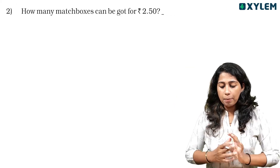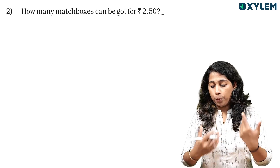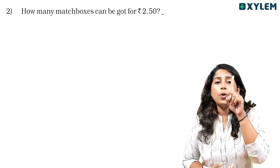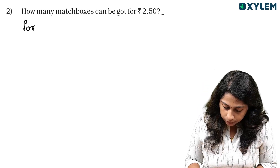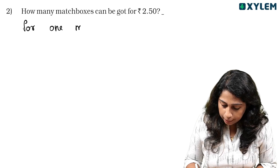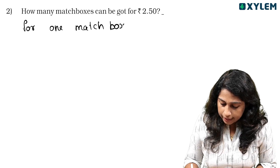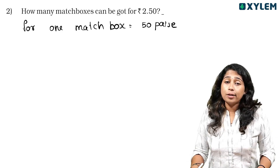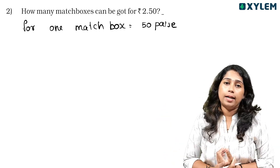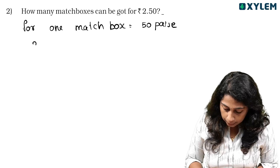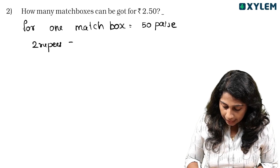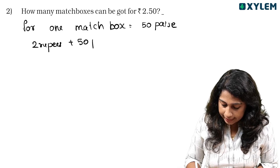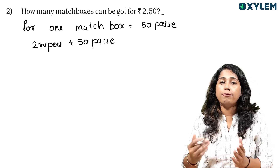So let's go to the next question: How many matchboxes can be bought for 2.50 rupees? How many matchboxes can be bought for 2.50? One matchbox costs 0.50 rupees. 2 rupees plus 0.50 rupees. 2 rupees plus 50 by 100. 0.50 is 50 by 100.